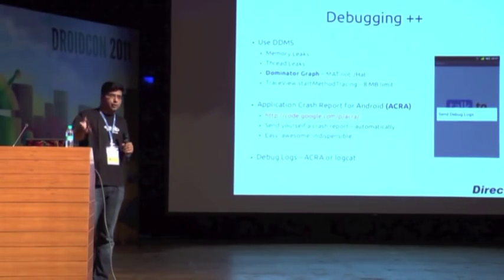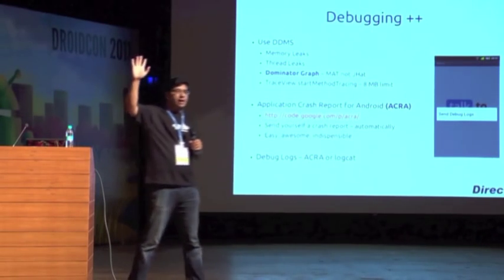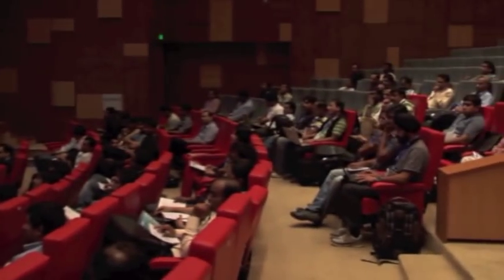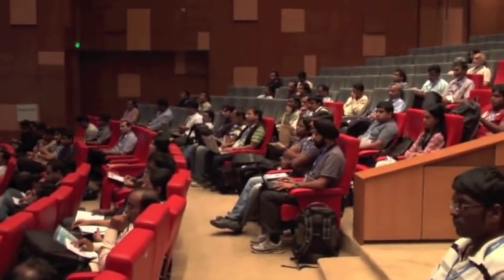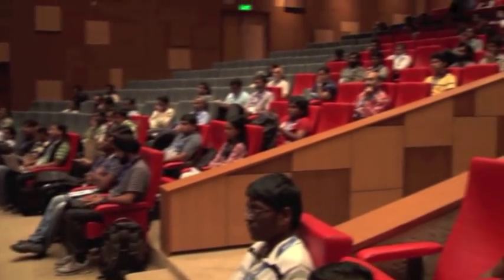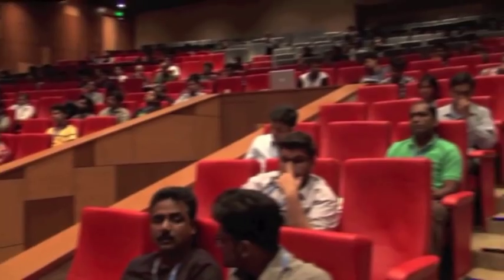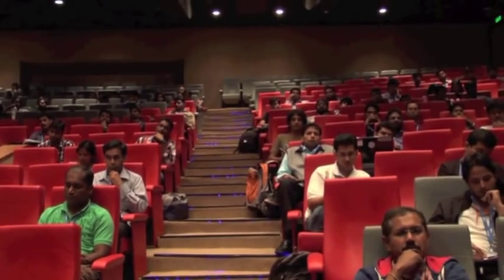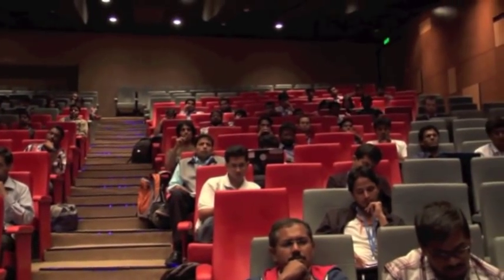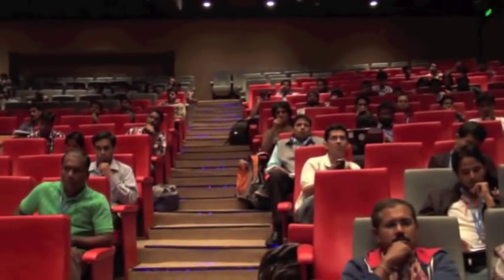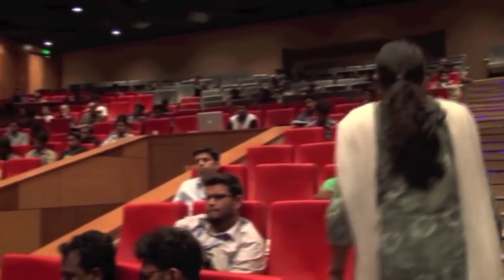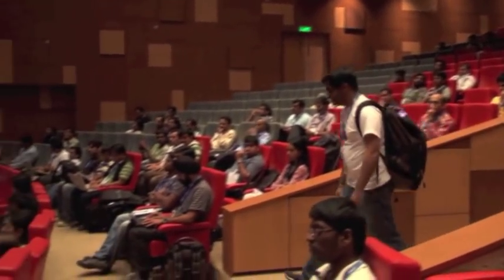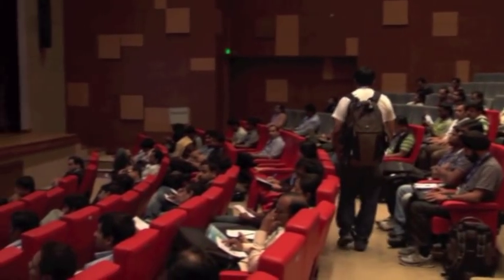How many of you are doing Android programming? And how many of you just started? So we have most of the audience doing Android programming and about half of them have just started. DDMS will tell you about what objects are created in your application, what your heap looks like, what your process heap looks like essentially. But importantly, it will also tell you about thread leaks. I have found that there are objects that don't get collected because you have written code badly, and DDMS will help you find that.